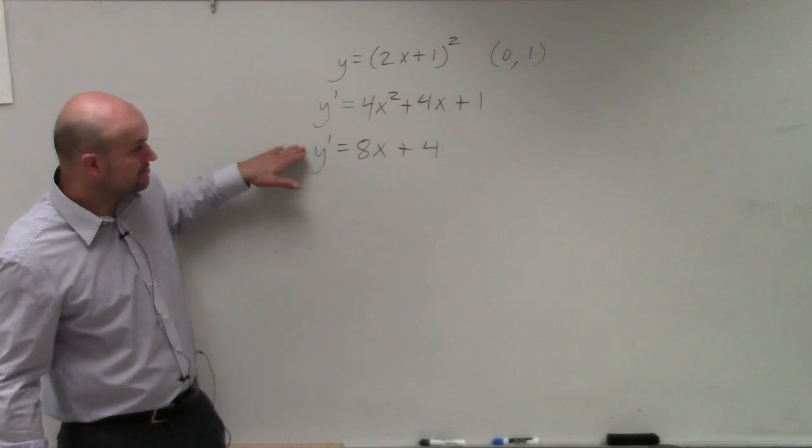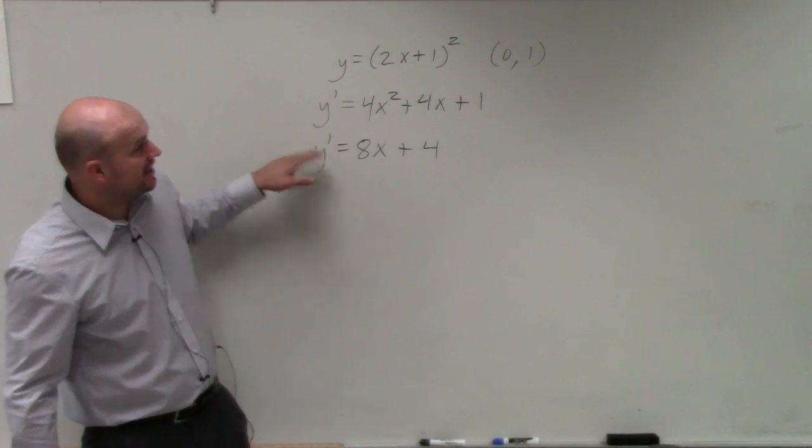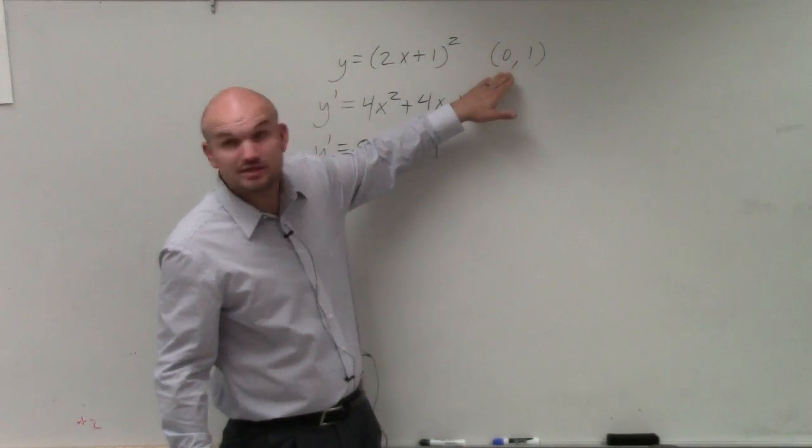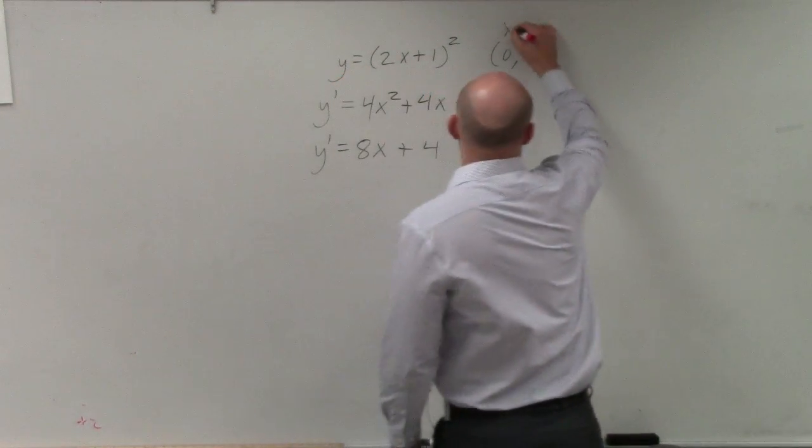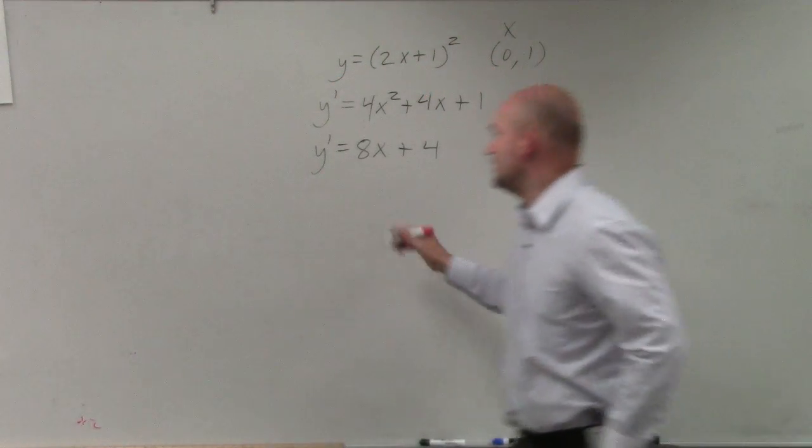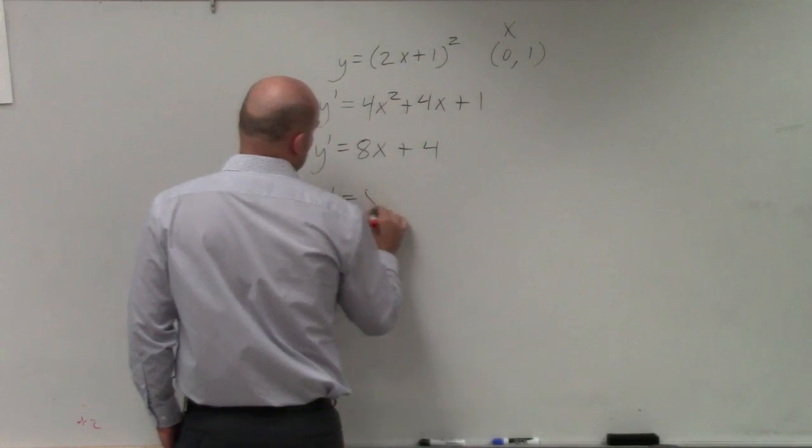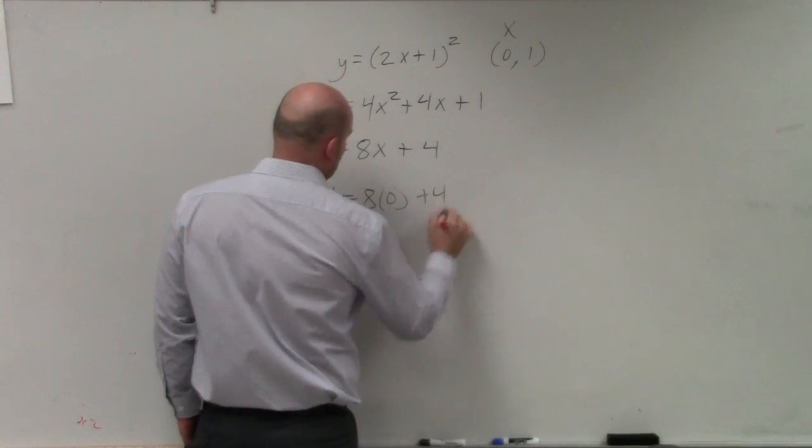Now, that is our derivative. That is going to be our tangent line. And they're asking us to find our slope going through this point. So therefore, this is our x-coordinate, which we can just go ahead and plug in. Y prime equals 8 times 0 plus 4.